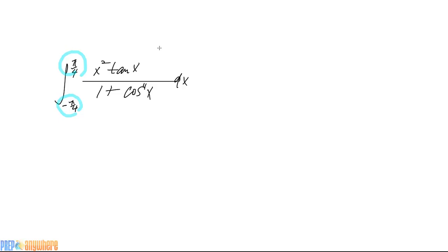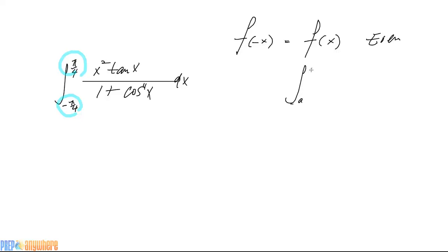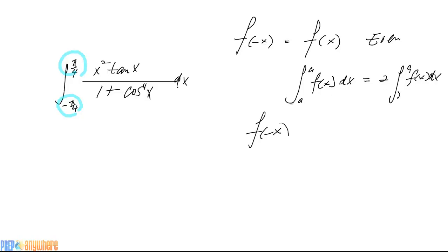You have to check for symmetry of the function inside the integral. If you replace x with minus x and it equals the original f(x), we know that's an even function, and the integral from minus a to a of f(x) dx equals 2 times the integral from 0 to a of f(x) dx. If it equals minus the original function, then the integral from minus a to a of f(x) dx will be 0.